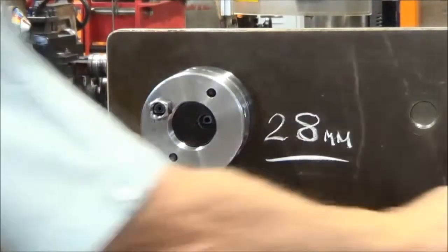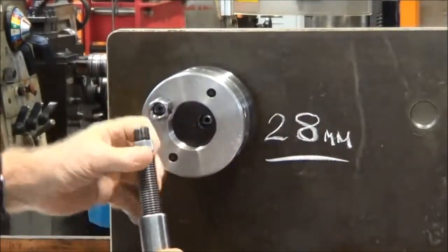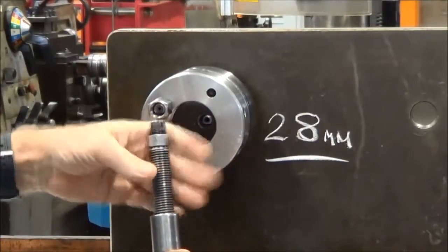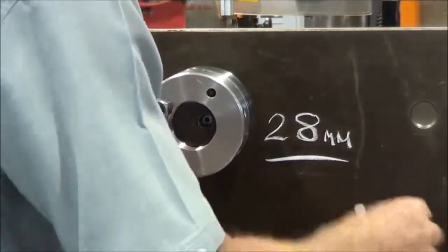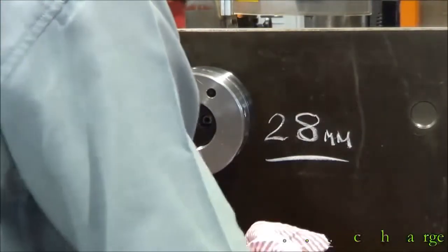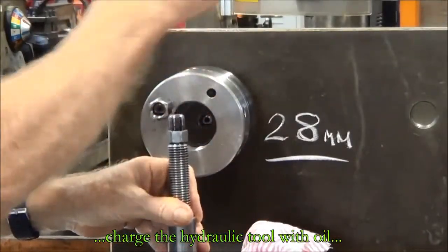Once again, we'll just screw out the threaded section as far as we can. Make sure that the plunger or piston is right down at the bottom. Prime the tool up with oil.